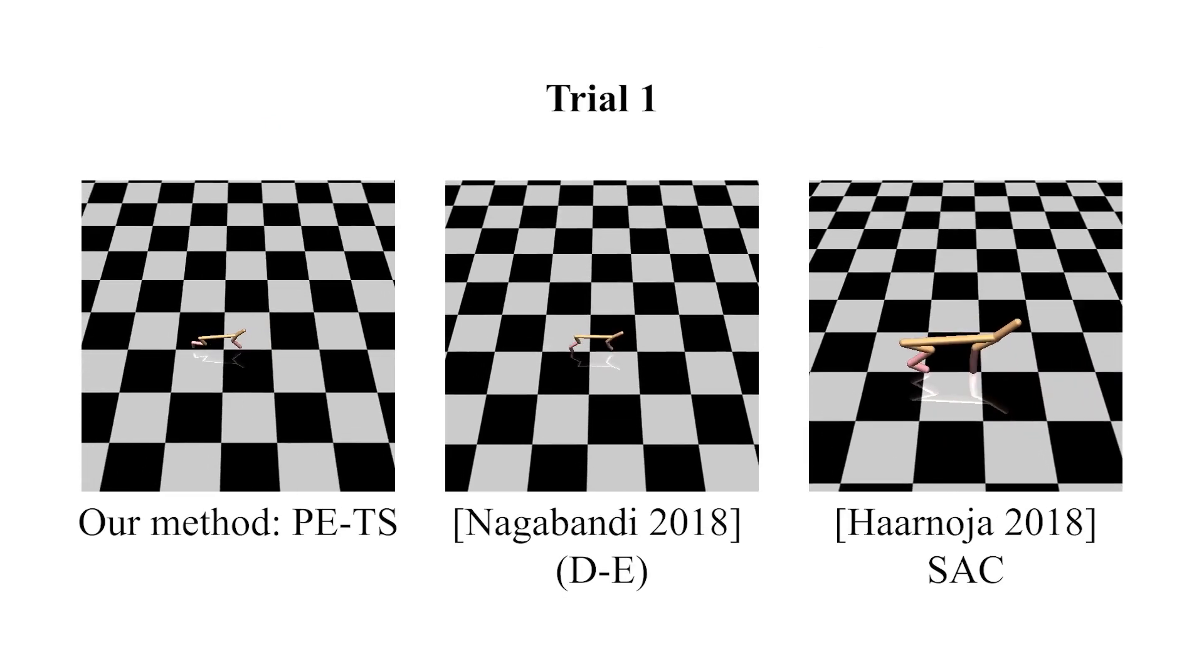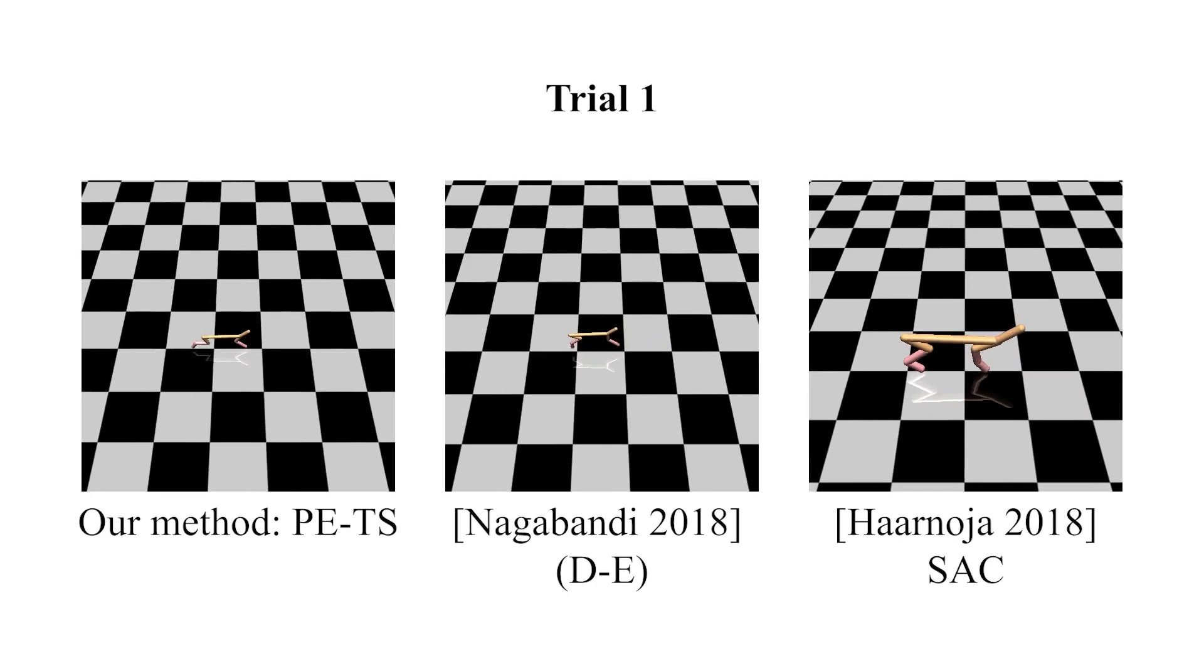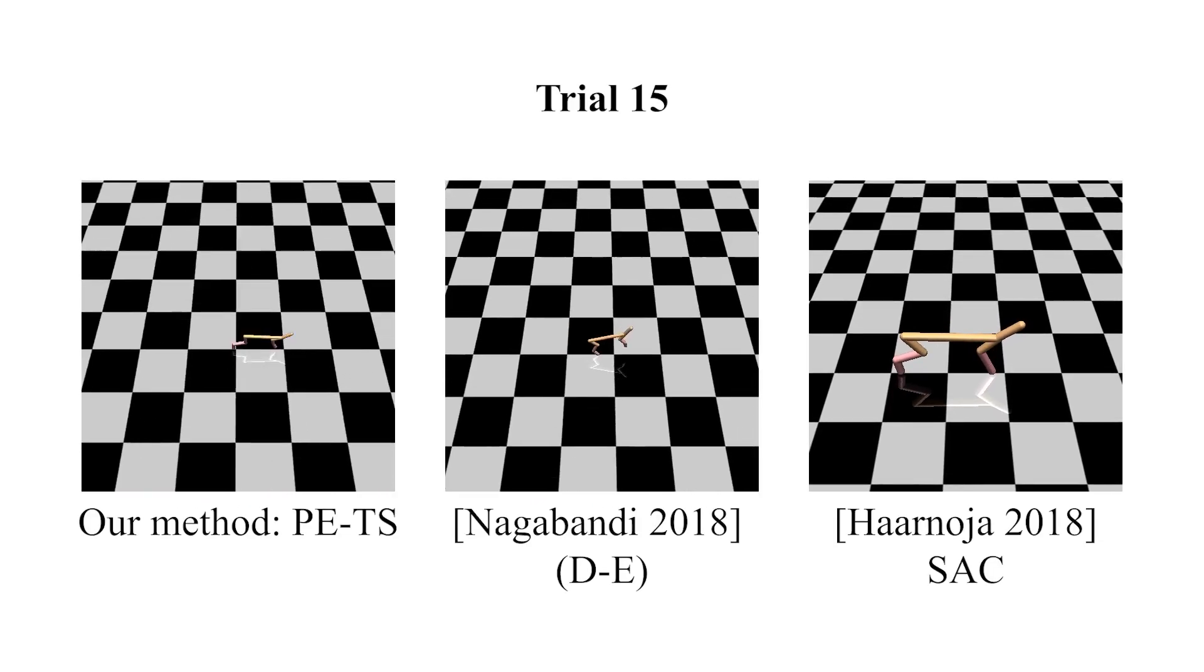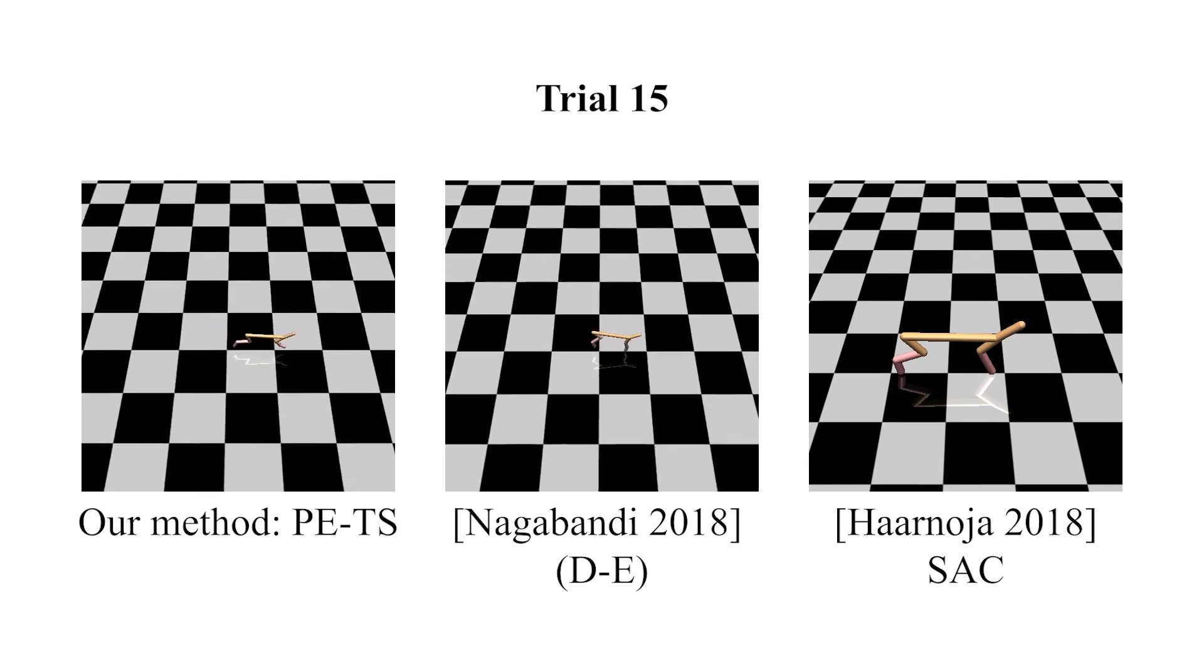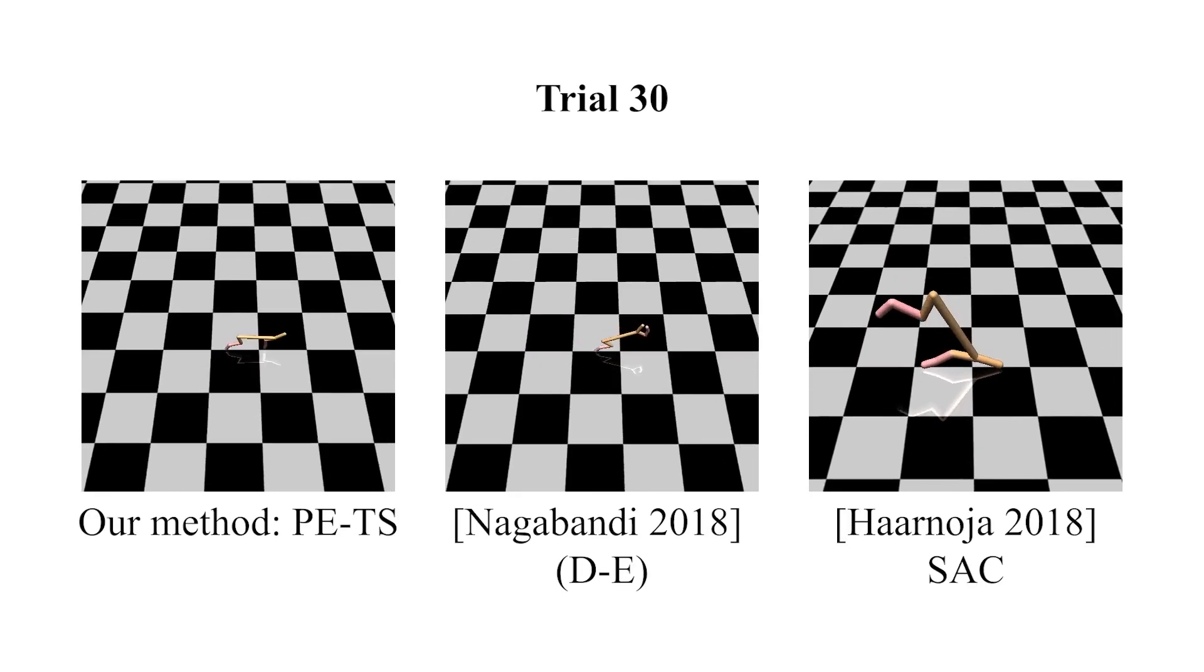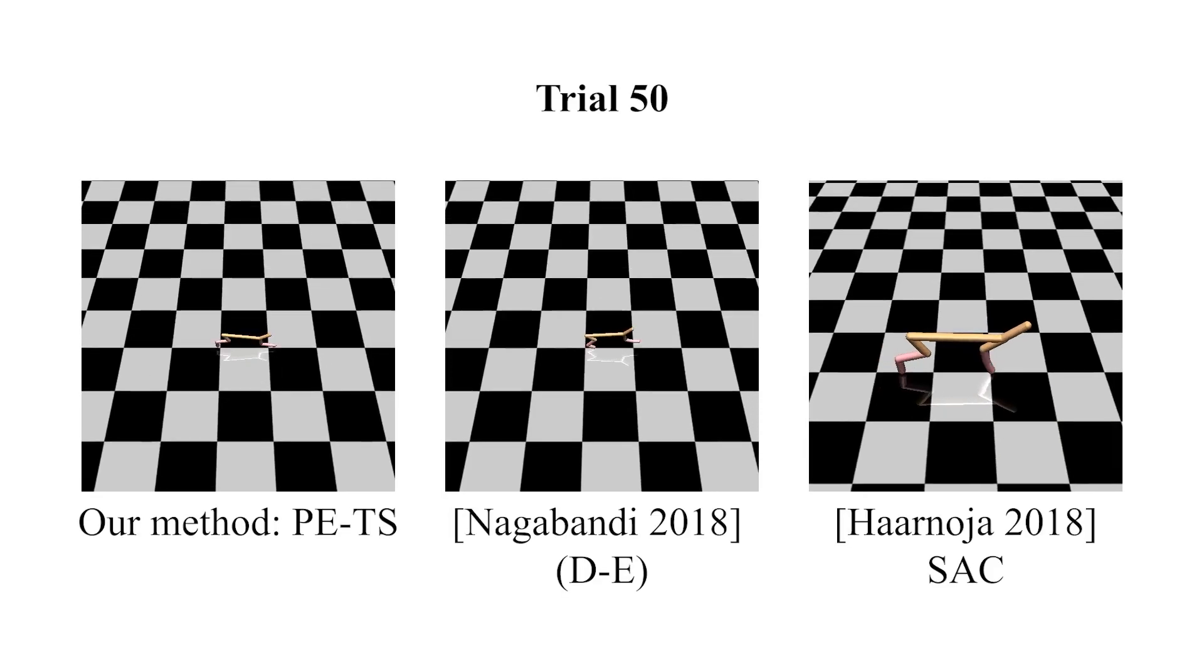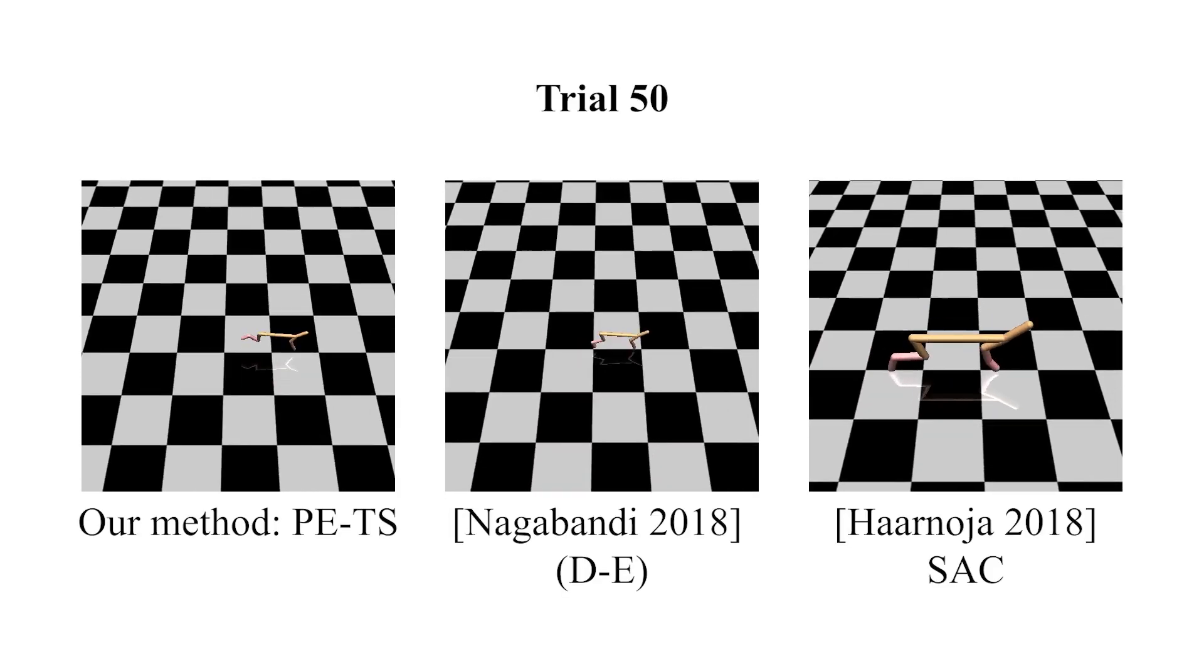Here we show the half-cheetah task. After 15 trials, an agent trained using PETS is already capable of running at a moderate pace, and after 30 trials can robustly run, outperforming PPO and DDPG in terms of asymptotic performance. SAC eventually does outperform our approach, but only after 1,000 trials.